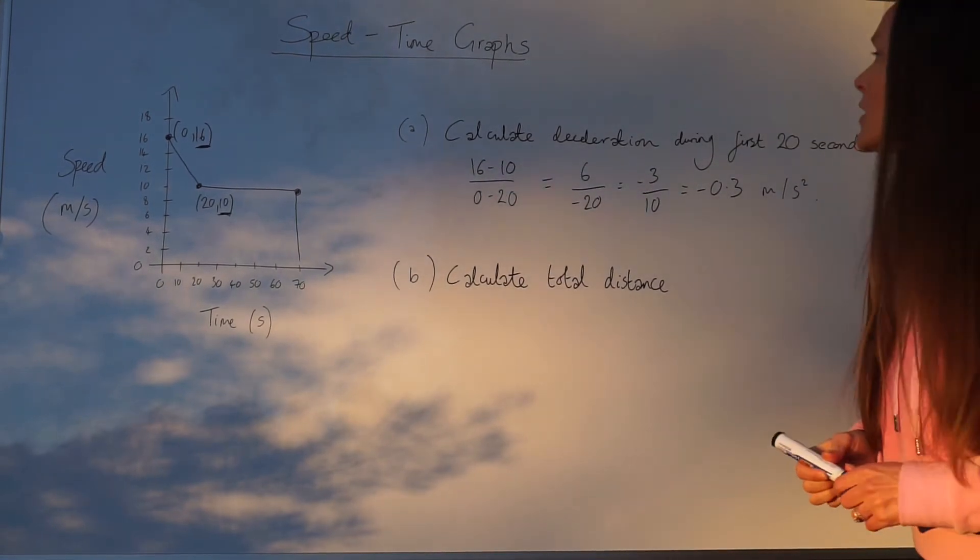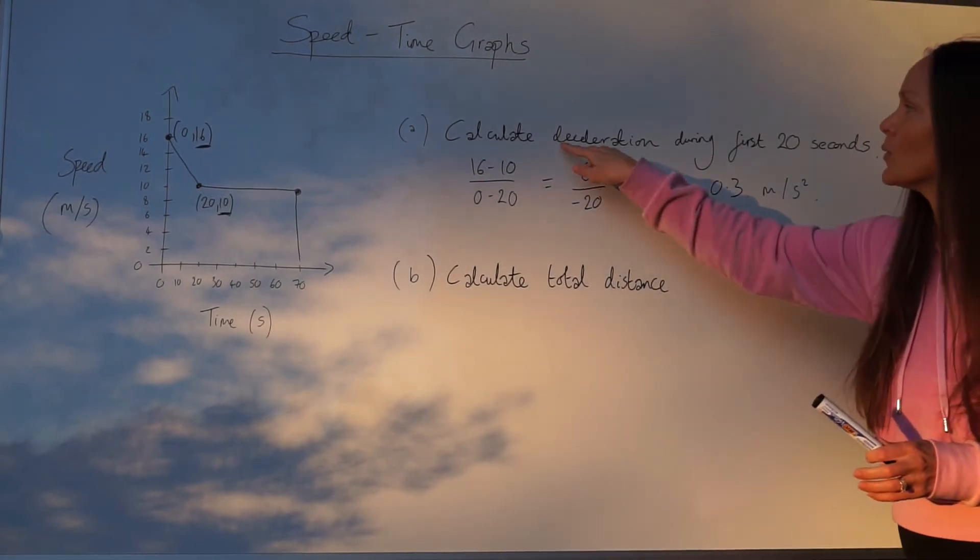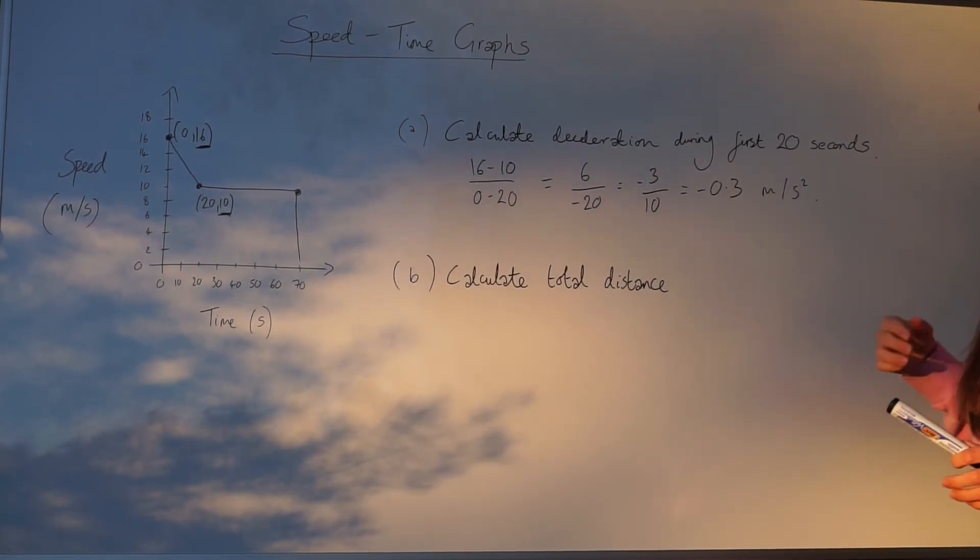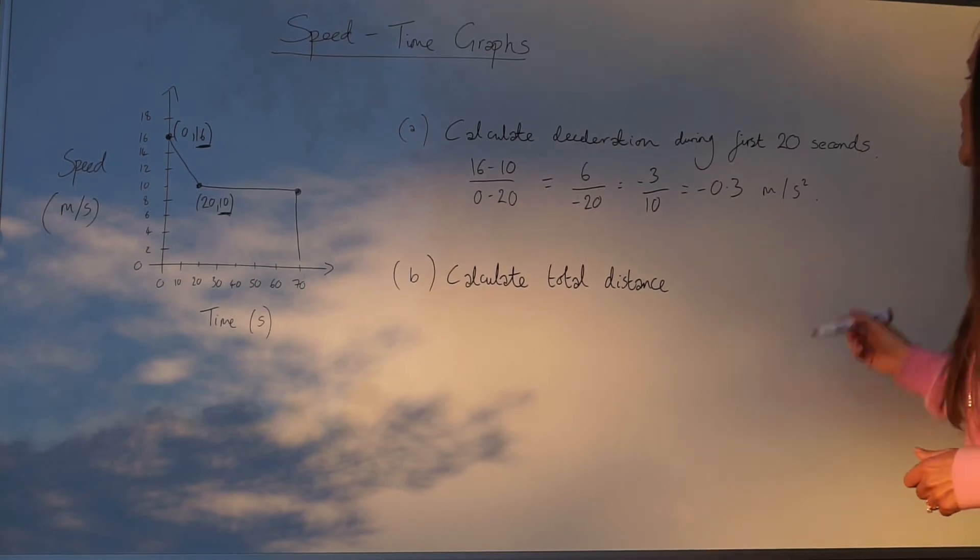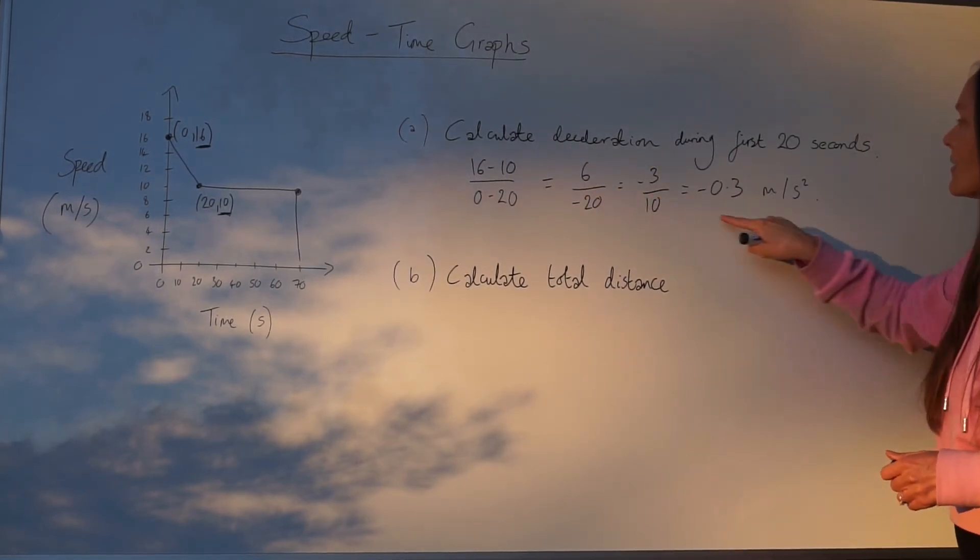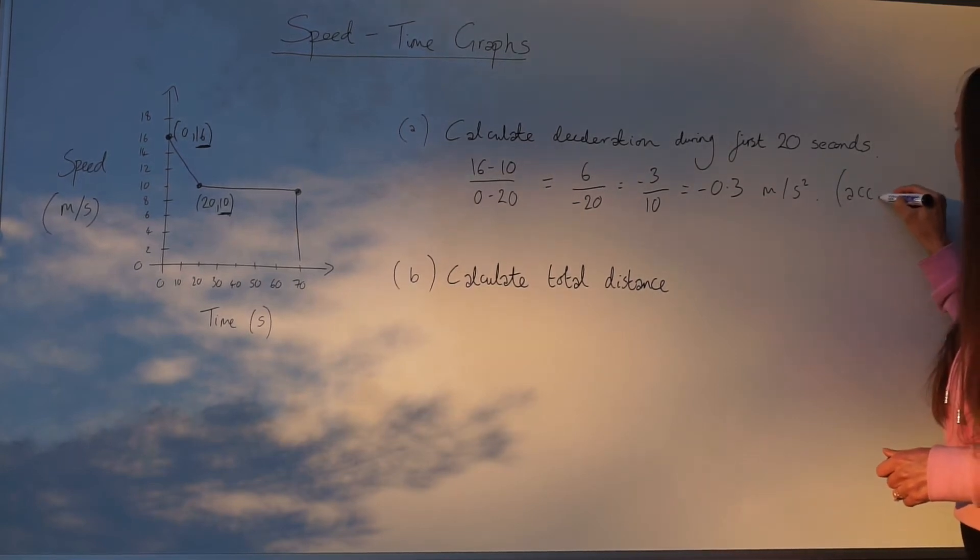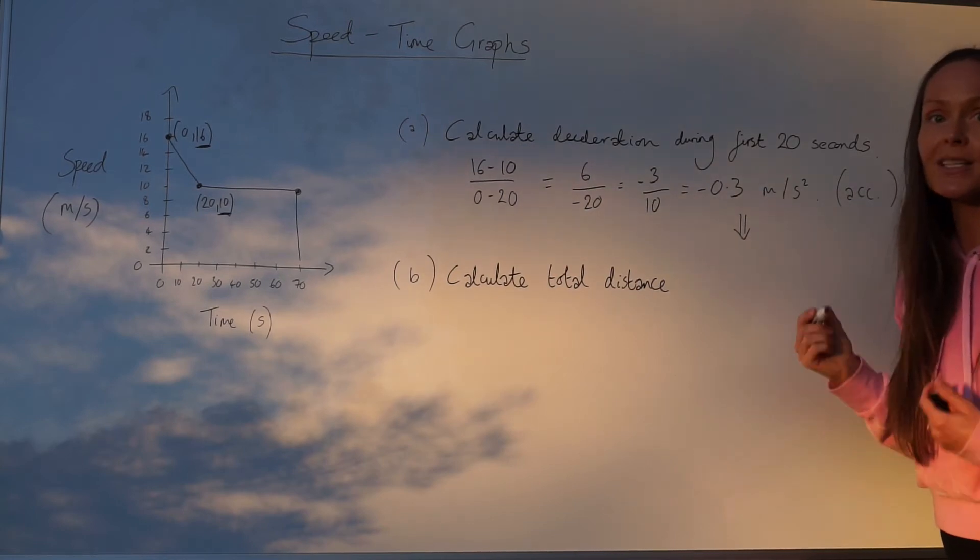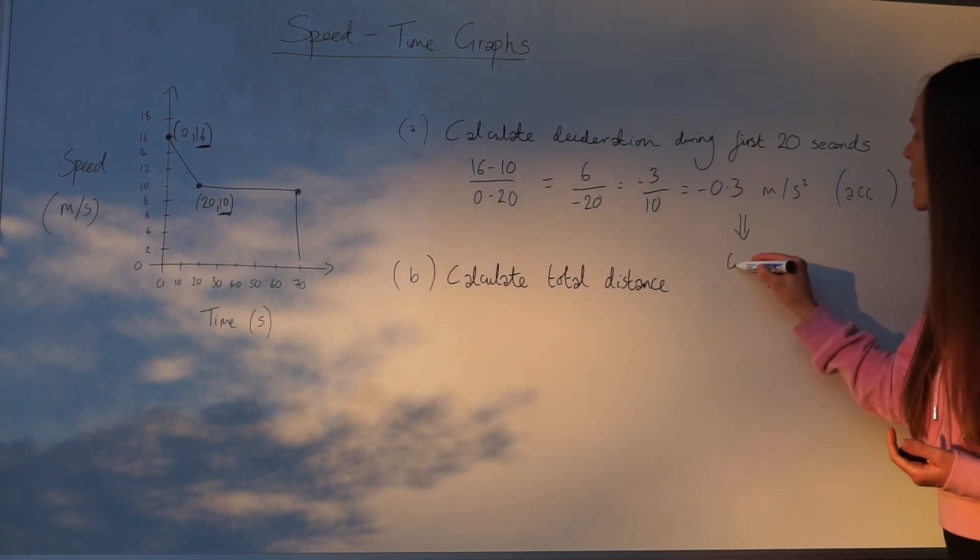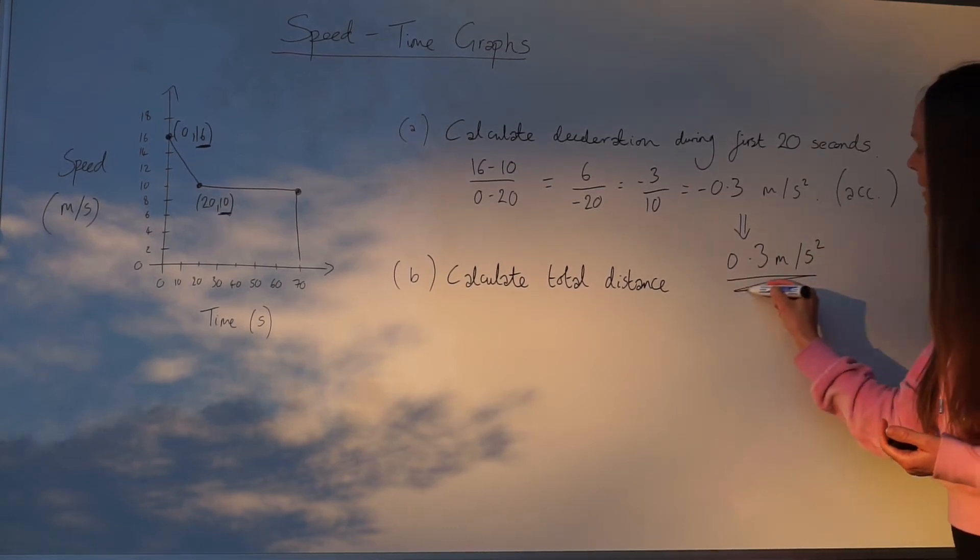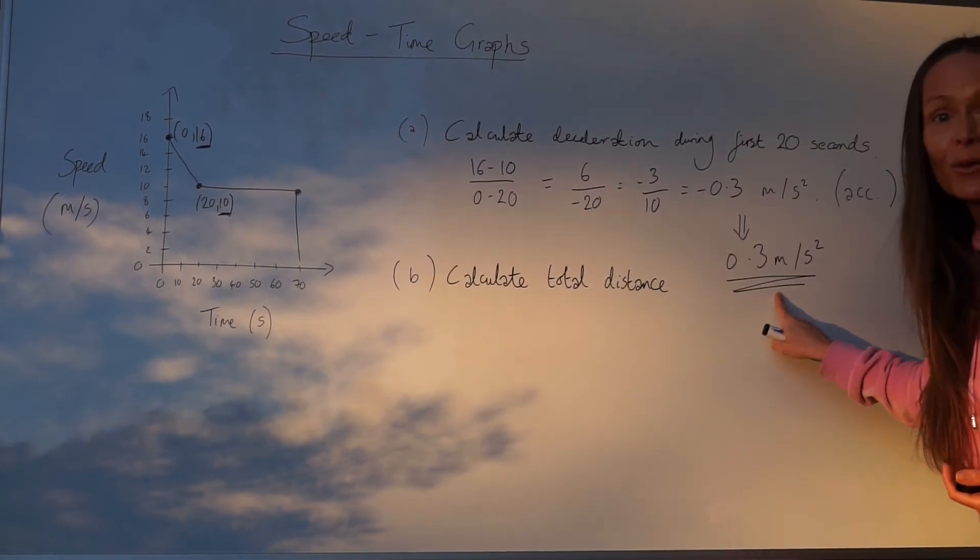Now we're not quite finished because in the question it asks for deceleration. If we leave it like this, it's in its acceleration form. So if the question had asked for the acceleration, this would be correct. But because it asks for deceleration, what you need to do is change the sign. So it's just positive 0.3 meters per second squared. That is what you need to write down for your final answer.